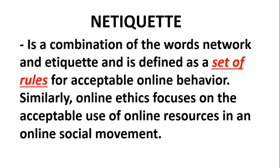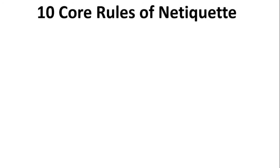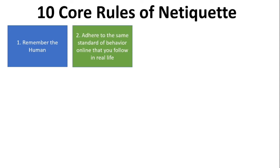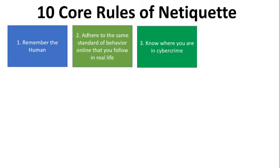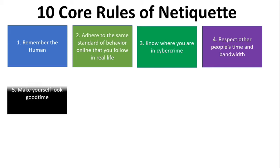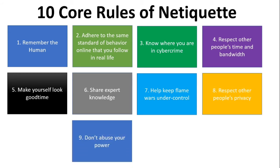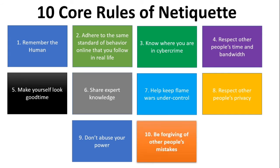Netiquette is a combination of the words 'network' and 'etiquette,' and is defined as a set of rules for acceptable online behavior. Similarly, online ethics focuses on the acceptable use of online resources. The 10 core rules of netiquette are: 1) Remember the human; 2) Adhere to the same standard of behavior online that you follow in real life; 3) Know where you are in cyberspace; 4) Respect other people's time; 5) Make yourself look good online; 6) Share expert knowledge; 7) Help keep flame wars under control; 8) Respect other people's privacy; 9) Don't abuse your power; 10) Be forgiving of other people's mistakes.